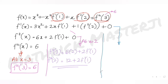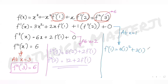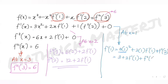Next, for f'(1): putting x = 1 into the first derivative gives f'(1) = 3·1² + 2·1·f'(1) + f''(2). Substituting f''(2) = 12 + 2·f'(1), we get f'(1) = 3 + 2·f'(1) + 12 + 2·f'(1).